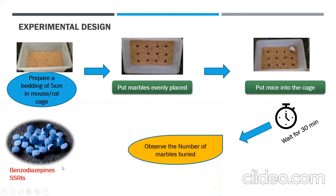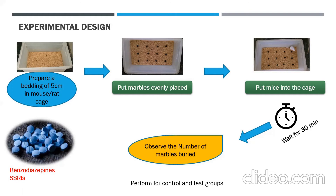Drugs like benzodiazepines and selective serotonin reuptake inhibitors are used as standard drugs in this test. Divide the animals into two groups: the control group, which receives normal saline, and the test group, which receives the drug at different concentrations. Burying is considered to have occurred if two-thirds of the marble is covered with the bedding material. The same procedure is repeated for both the control and test groups. Anxiolytic drugs reduce the number of marbles buried by the mice.